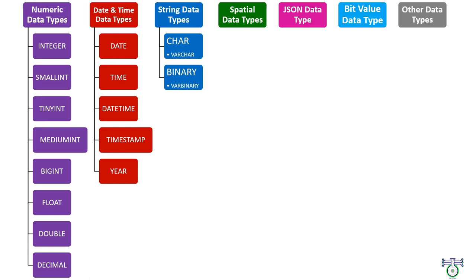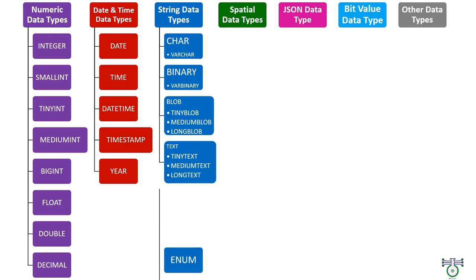Char and varchar are used to represent character strings of fixed and variable length respectively. Binary and varbinary are used to represent binary strings of fixed and variable length. Blob, tiny blob, medium blob, and long blob are used to represent binary large objects of various sizes.